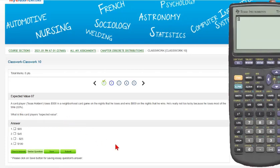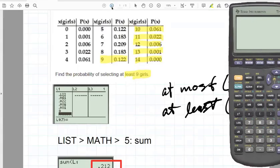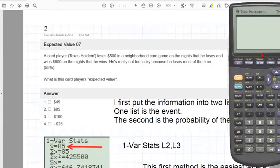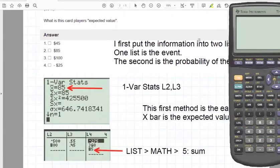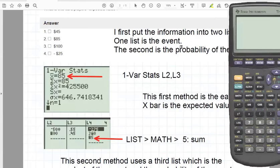And the expected value is something that we can do also on the TI-83 using the lists, and there are actually two ways to do it. I'm going to get the calculator out of the way here because I can describe what we're doing on the lists.